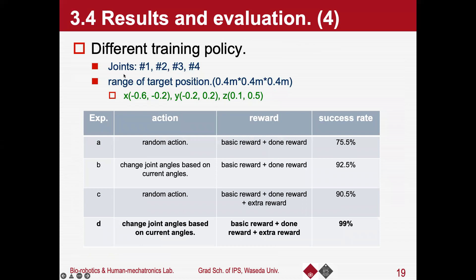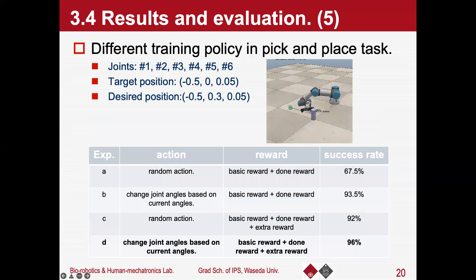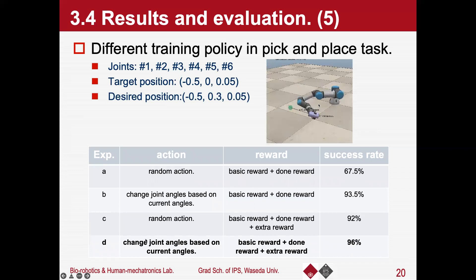Finally, to find out the effect of different training policies, we designed two different kinds of actors combined with different reward shaping and conducted four controlled experiments. Each experiment includes 200 rounds of tests, and the settings and results are shown in the table. By comparison, we found that the extra reward can improve the success rate, and changing actions based on the current state can also improve performance. We also verified these combinations in the pick and place task, and obtained a similar conclusion: the extra reward and action changes based on current state both improve performance.